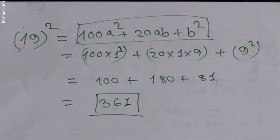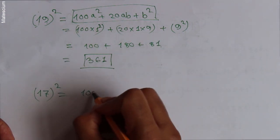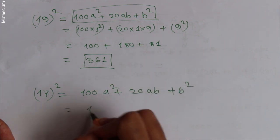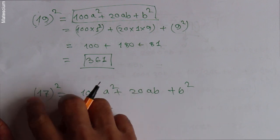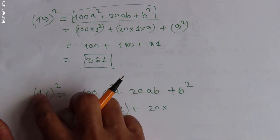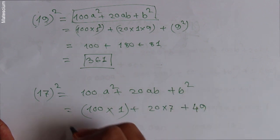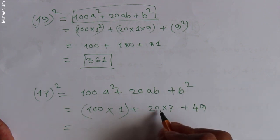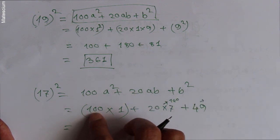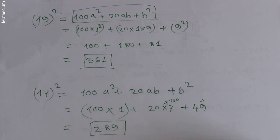Let's do one more practice. Let's say 17 squared. Write the same formula: 100A² + 20AB + B². Here A is 1 and B is 7, so 100 times 1 squared, which is 100, plus 20 times 1 times 7, which is 140, plus 7 squared, which is 49. So 100 plus 140 plus 49 equals 289.